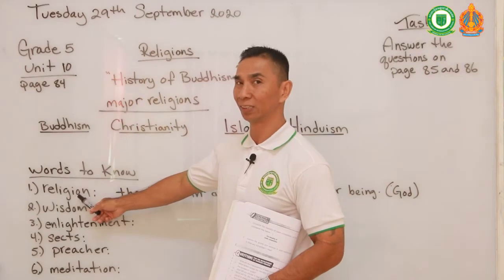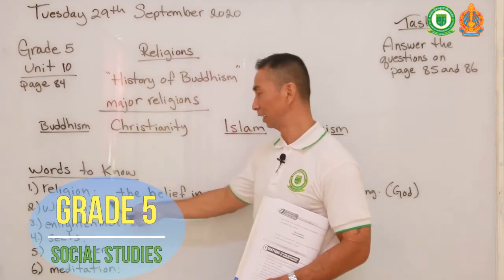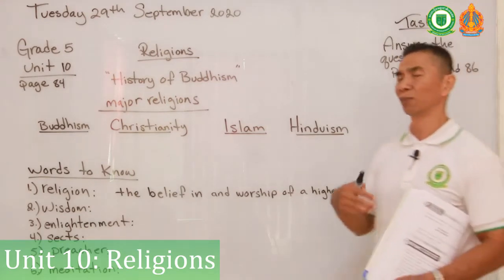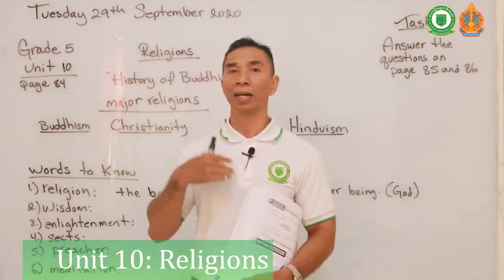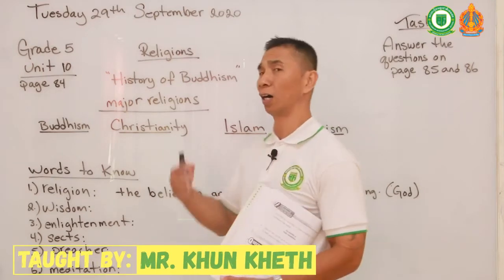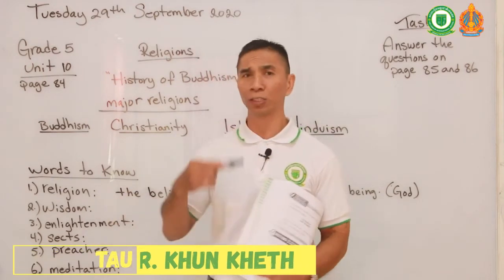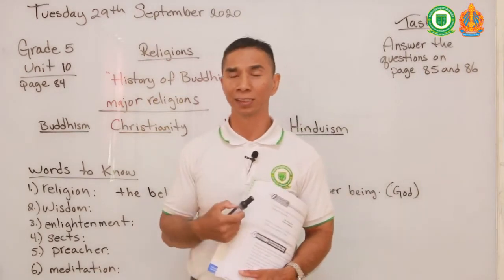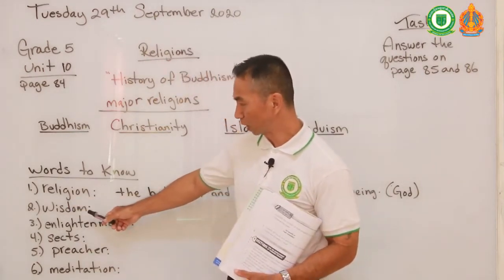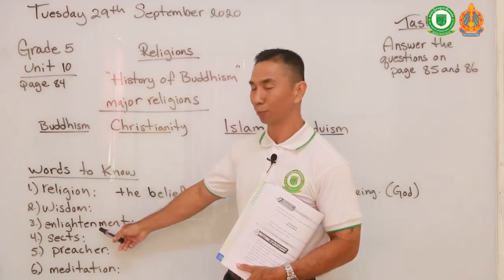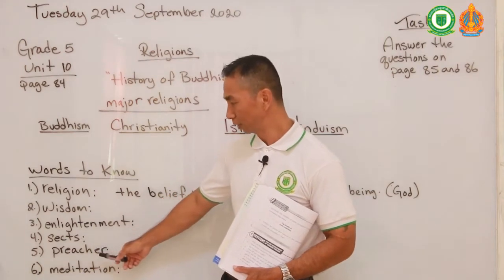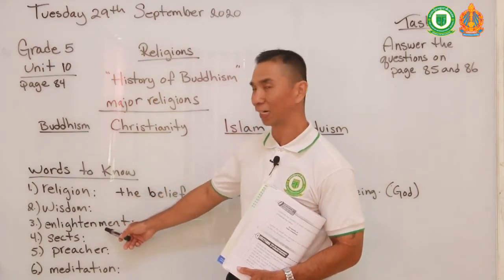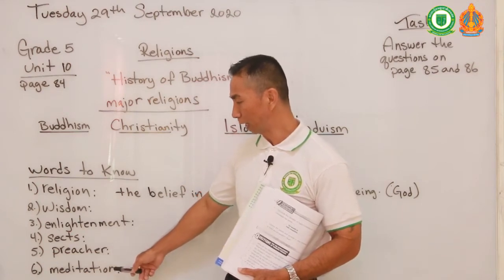The first word on the board is 'religion.' Religion is the belief in and worship of a higher being — a god. It is someone's belief, your belief of a person or a god. You can also communicate with me more on our Telegram post and we can have deeper discussions about religions. Our second word is 'wisdom,' the third word is 'enlightenment,' then 'sect,' then 'preacher,' then 'meditation.'